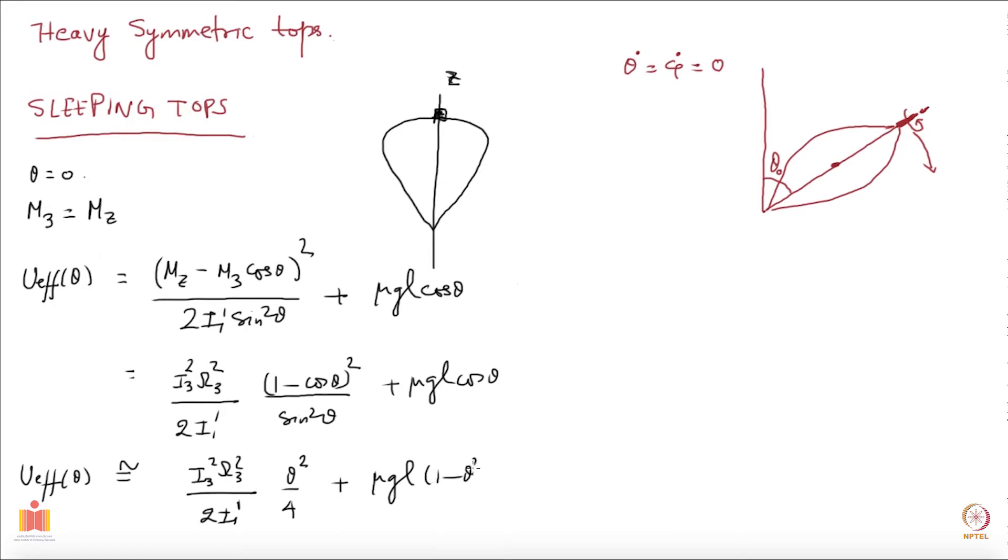This I want to write as mu gl plus i3² omega 3² these two factors, then I have a theta square in these two terms which I take common and you have 8i1 prime and then you have mu gl over 2 times theta square plus higher order terms.